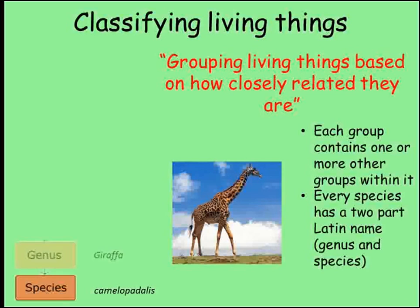Each species belongs to a genus, and a genus can contain several different species. The Latin naming system for any organism consists of the genus and the species — the first part of the name is the genus and the second part is the species. Different species belonging to the same genus are relatively closely related. This system of groups within groups extends upwards through different levels.